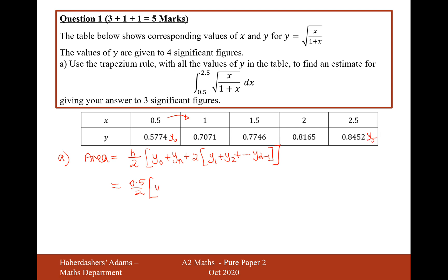So it's going to be 0.5774 plus 0.8452 plus two lots of, and then it's each of these y values in the middle, y1, y2, y3, sorry that's y4 isn't it? So therefore it's going to be 0.7071 plus 0.7746 plus 0.8165 brackets.